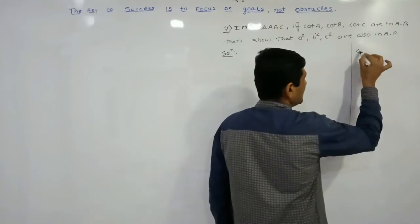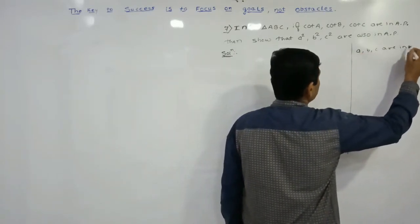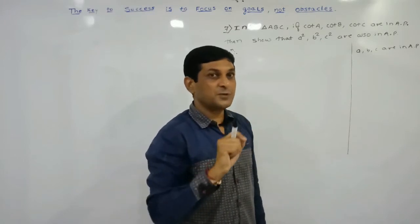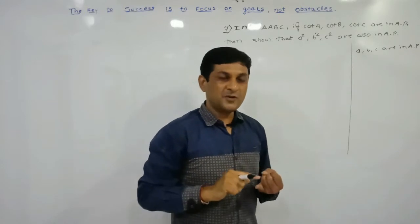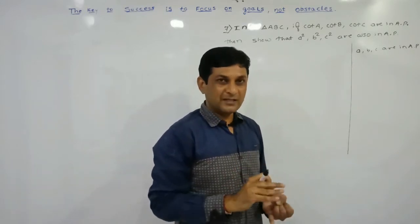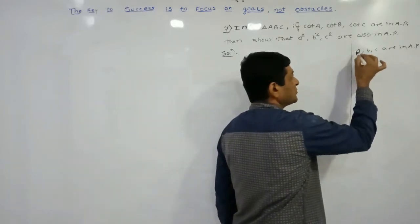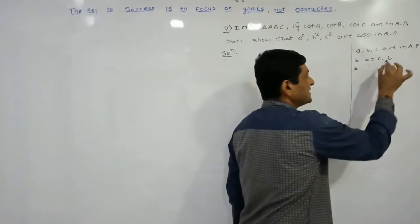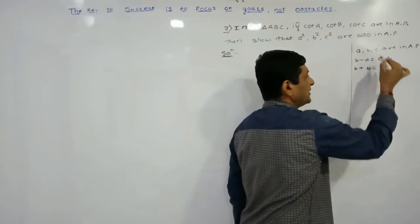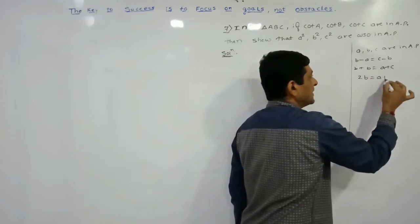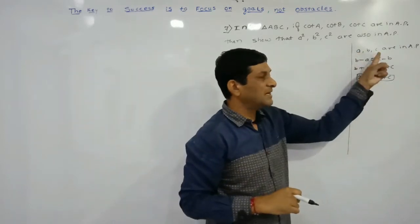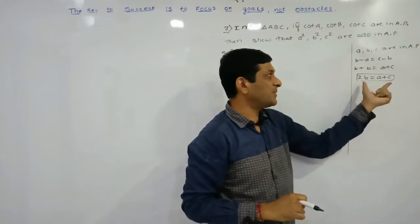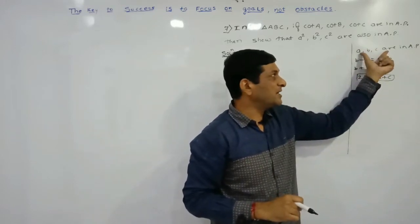First let us revise some important results about arithmetic progression. Suppose a, b, c are in arithmetic progression — they satisfy the condition that the difference of any term to its previous term is constant. So b minus a equals c minus b, which gives us 2b = a + c. The middle term b satisfies twice b equals the sum of the outer terms.